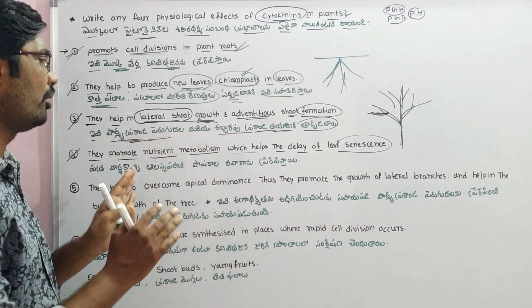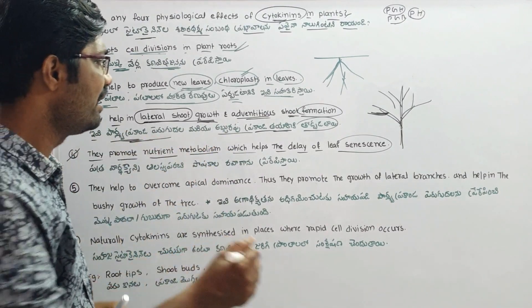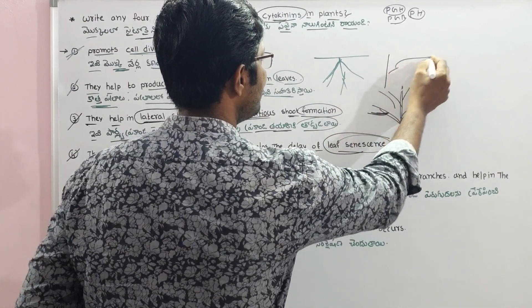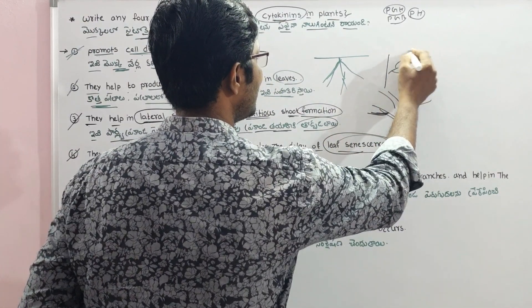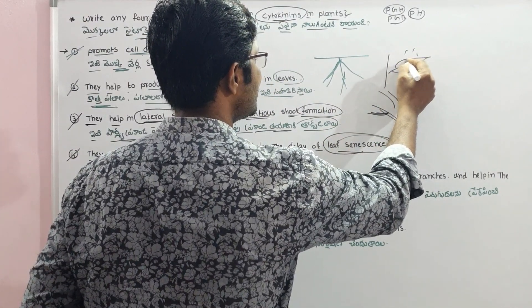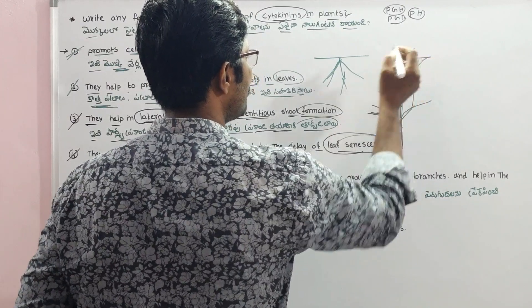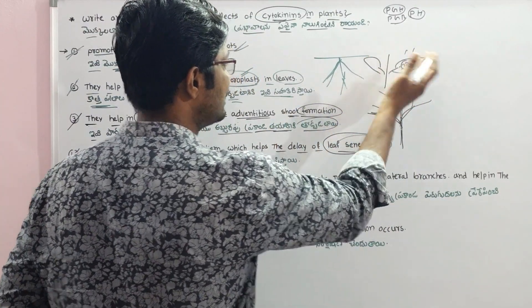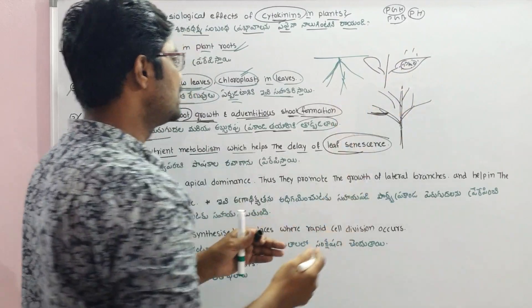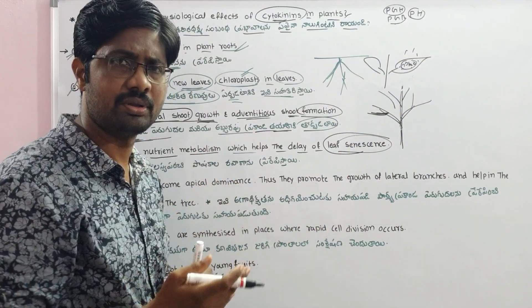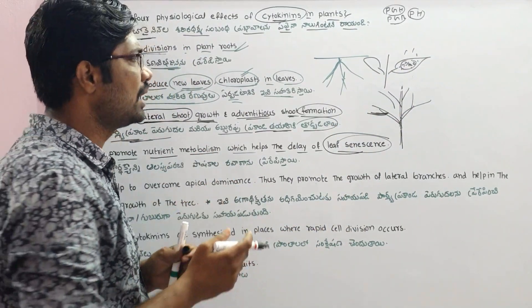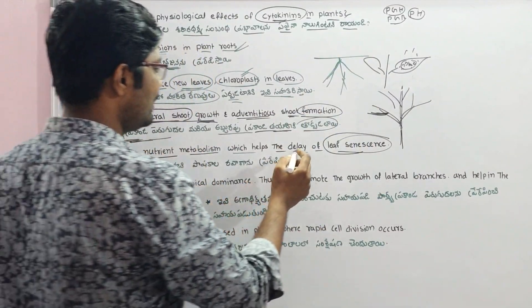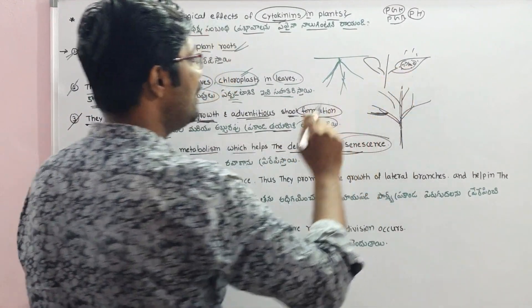To explain this further: if you have a leaf, it carries out photosynthesis and produces food material. Cytokinins help produce nutrients and support plant growth. This is why cytokinins delay leaf senescence — by maintaining nutrient metabolism, the leaf stays functional longer.